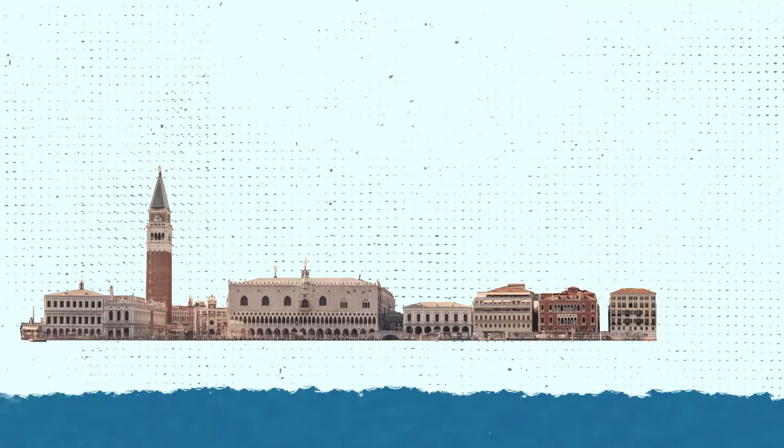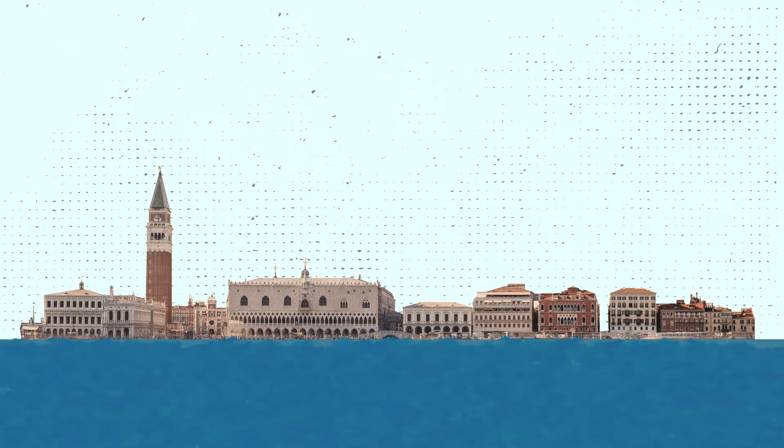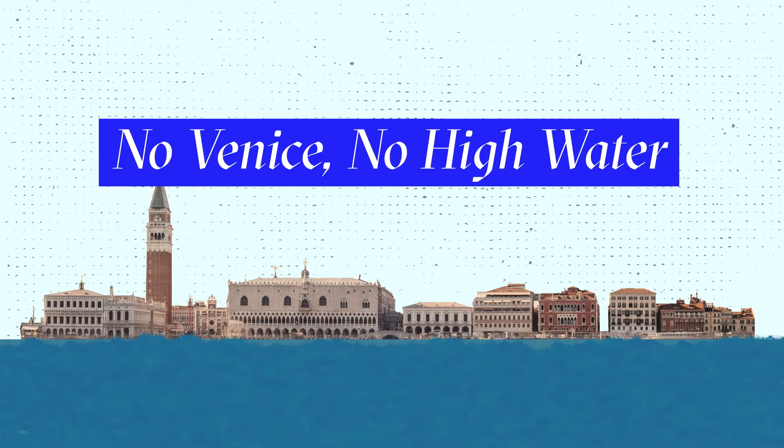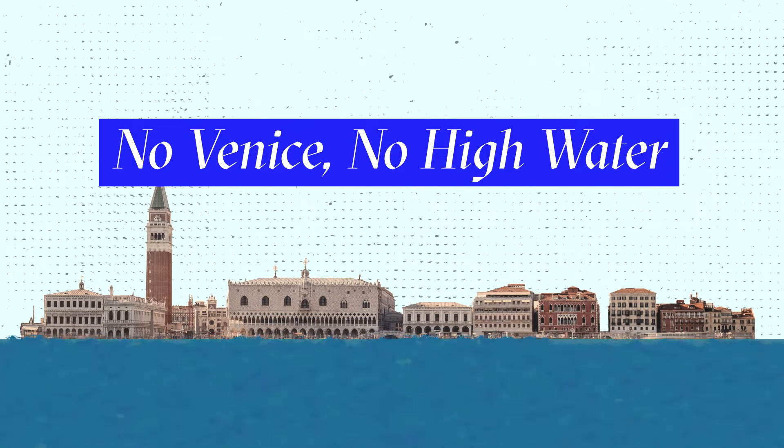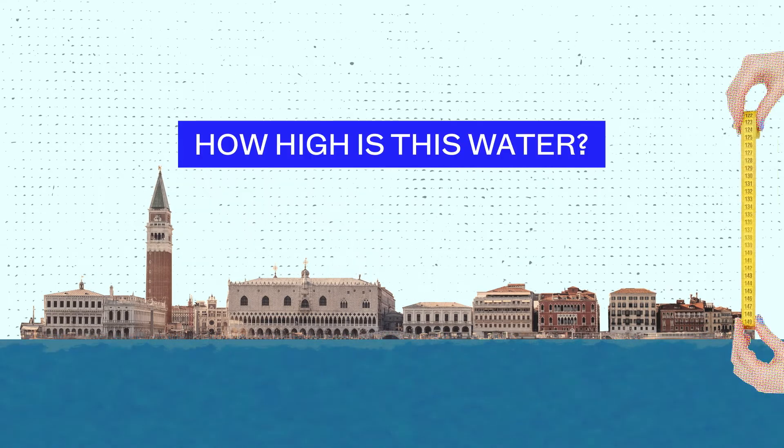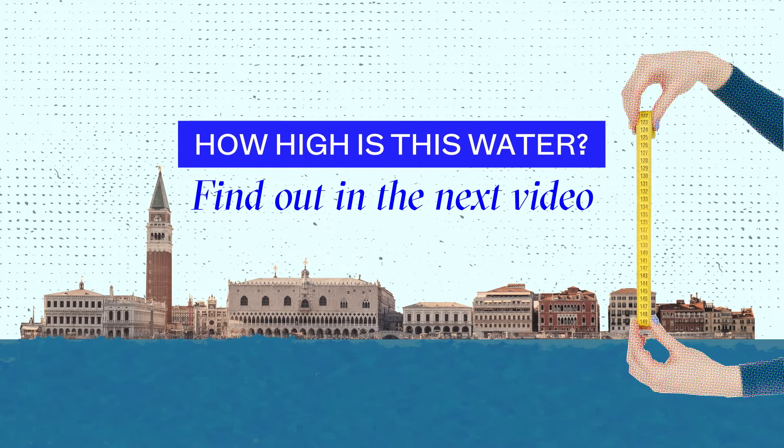Tides rise and fall all over the world, but high water is the high tide that invades the streets. So if there were no Venice, there would be no high water either. But how high is this water? Find out in the next video.